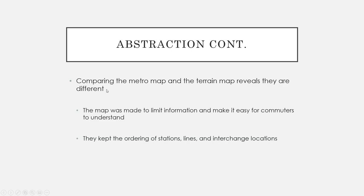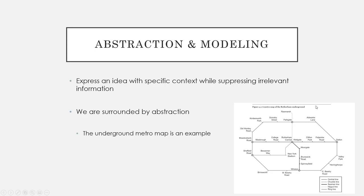Comparing a metro map to a terrain map — they are very different maps. The metro map is made to limit information so that commuters can understand it more easily. If you handed a user a terrain map of the metro system, that would be very confusing. So we've abstracted a lot of unnecessary information for ease of use. What is kept from a terrain map could include: the ordering of the stations, the specific metro lines, and the interchange locations — everything else has been removed.